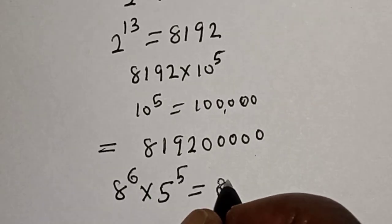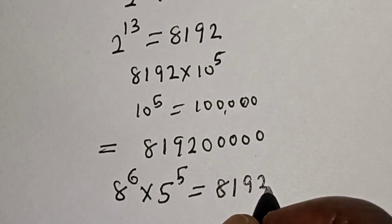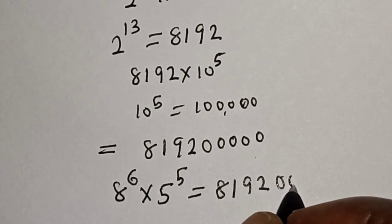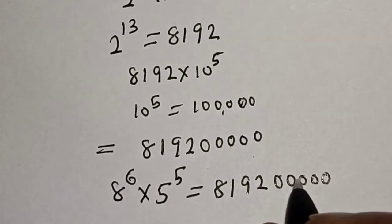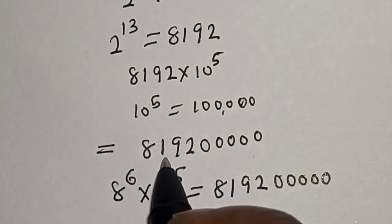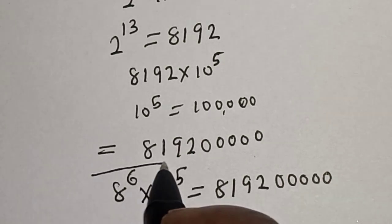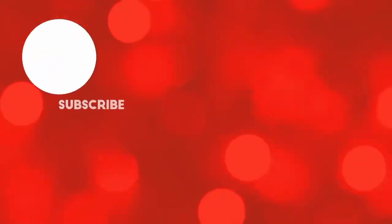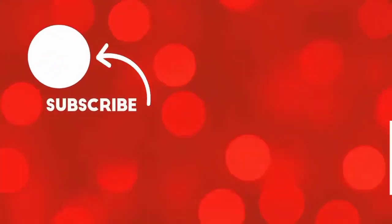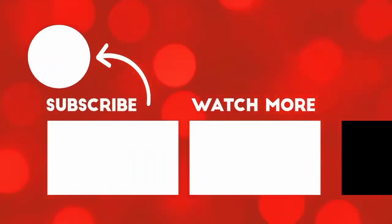Therefore, 8 raised to power 6 multiplied by 5 raised to power 5, without using a calculator, is equal to 819,200,000. If you enjoyed the class, please don't forget to like, share, comment, and subscribe. Thank you.